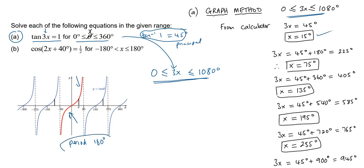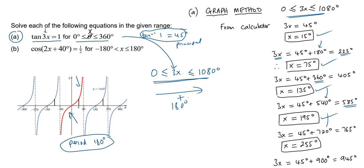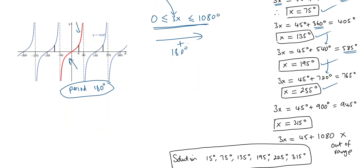The next value — this is why tan is nice and easy — we just keep adding 180 degrees, because the values repeat every 180 degrees. So we add 180 to get 225, divide by 3 gives x equals 75. Then add another 180 — that's 45 plus 360 — divide by 3 gives x equals 135. Add another 180, giving 540 plus 45, divide by 3 gives x equals 195. Add another 180 gives x equals 255. Then add another 180 and we get 900 plus 45, giving x equals 315.